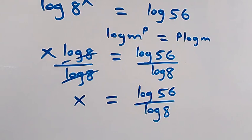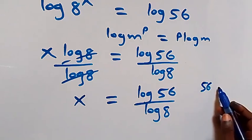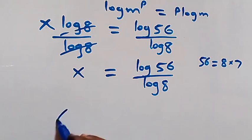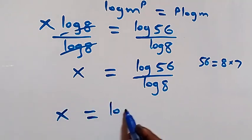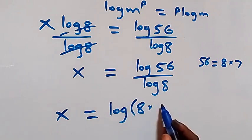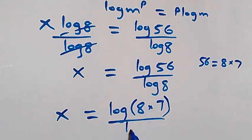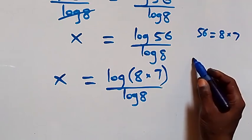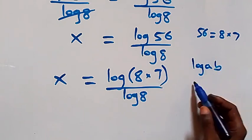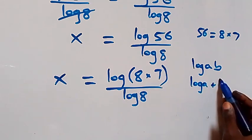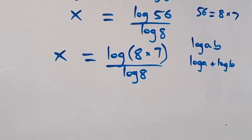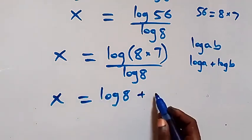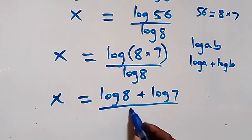We can reduce this further since we can write 56 as 8 times 7. So what we have becomes x equals log(8 times 7) over log 8. Applying the product rule, log(a times b) equals log a plus log b, we get x equals log 8 plus log 7, all over log 8.